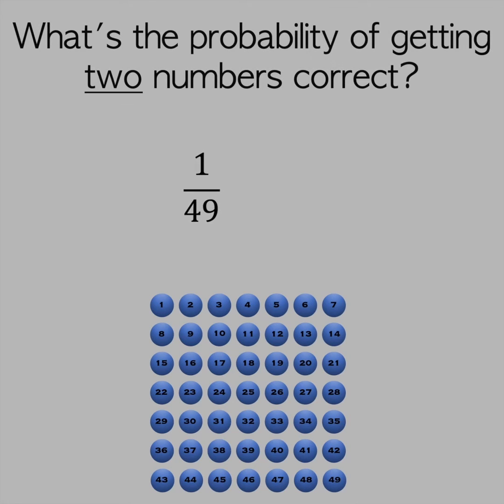If we include a second number to guess, after selecting the first number, there are 48 possibilities remaining, so the chance of selecting both numbers in the correct order is 1 over 49 multiplied by 1 over 48.